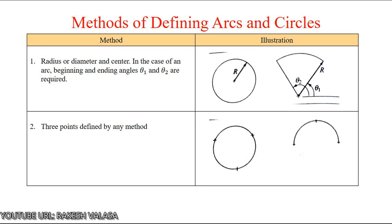The next method is defining arcs and circles. For constructing a circle, we need two parameters: radius or diameter, and center. Using these parameters, we can construct circles in any software. For arcs, we require a beginning angle theta one and ending angle theta two. Using these two parameters, we can construct arcs. Another method uses three points: first point, second point, and third point. By using these three points, we can construct an arc.